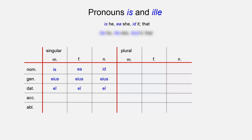The accusative for the singular masculine is eum, the feminine eam, and the neuter it. The ablative for the masculine singular is eo, feminine ea, neuter eo.